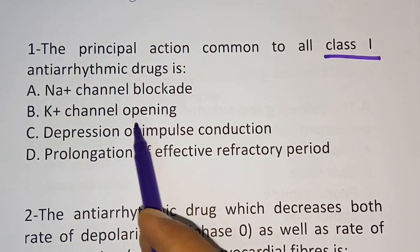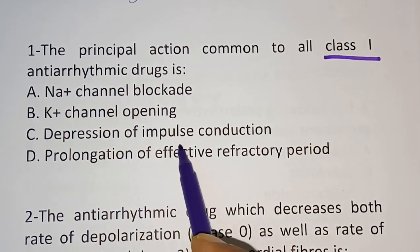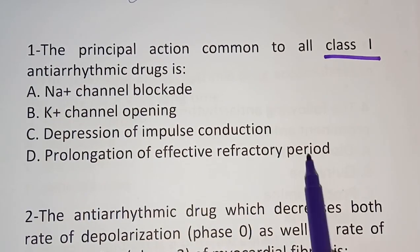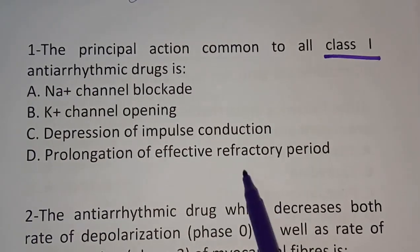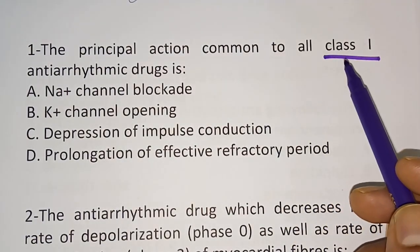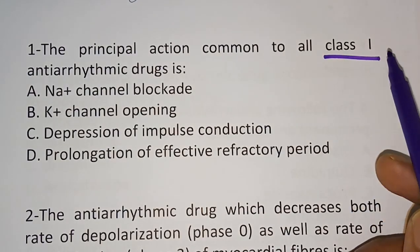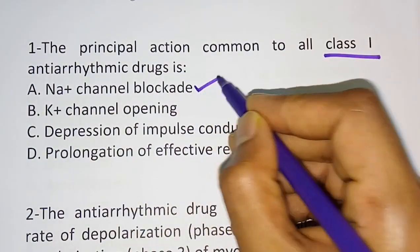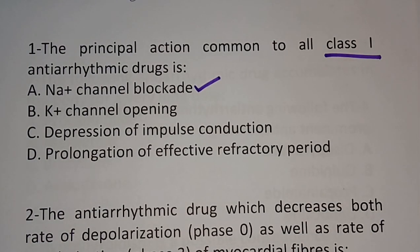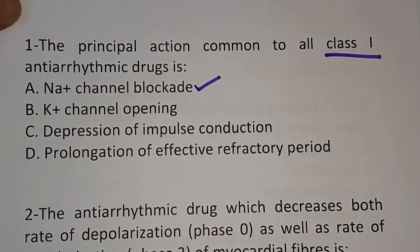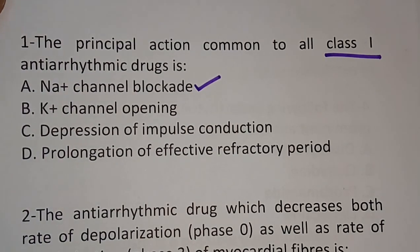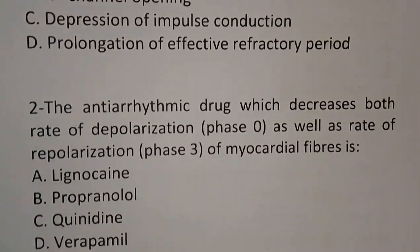Option C: depression of impulse conduction. Option D: prolongation of effective refractory period. The correct answer is option A — sodium channel blockage. Class 1 anti-arrhythmic drugs are also known as sodium channel blockers. Class 1 is divided into three subcategories, but all of them share the same mechanism of action: sodium channel blockage.